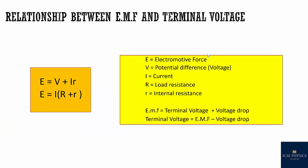What is the relationship between EMF and terminal voltage? EMF is equal to terminal voltage plus voltage loss. This ir is the voltage loss, so: ε = V + ir. Separating v into ir, and taking common i(r + R).